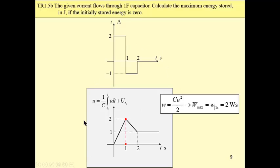We have already found this voltage waveform as we have here on the left. From this formula, it is clear that the maximum value for the given waveform is at this time instant where voltage has its maximum, which is here. For 1 second, voltage has a maximum of 2 volts, which gives 2 watt-seconds as the maximum energy stored in the capacitor.